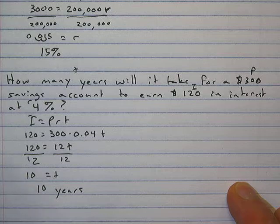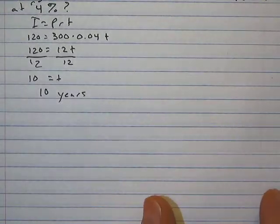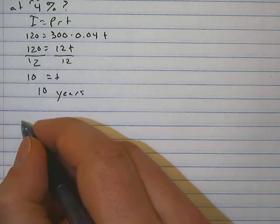So the answer is 10 years. It would take a savings account of $300 ten years to earn $120 interest at 4 percent. Let's do one more.